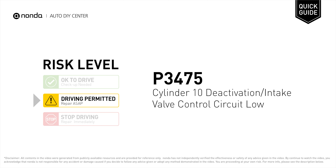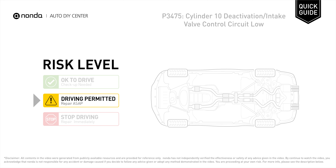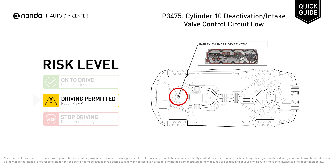P3475 is a diagnostic trouble code for cylinder 10 deactivation or intake valve control circuit low. Under this circumstance, short distance driving is permitted, but your vehicle should be repaired ASAP. It indicates that the ECM has detected voltage or resistance inside the cylinder 10 deactivation or intake valve control circuit that is excessively low.